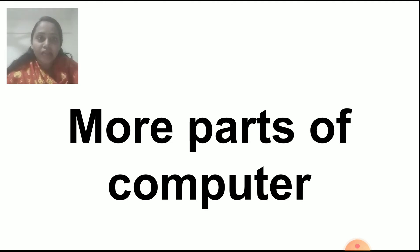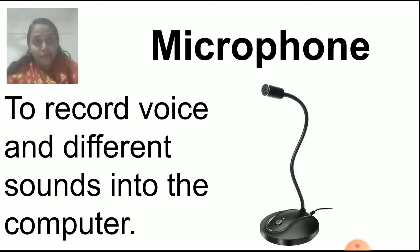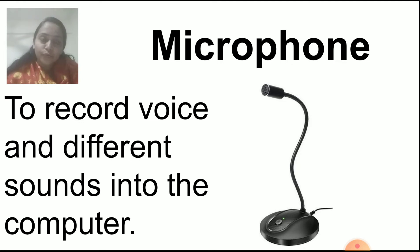Now today we will start with the more parts of computer. First one is a microphone. Can you see the microphone in the picture? We use this microphone to record the voice and different sound into the computer. It has one wire that we attach to the CPU — the brain of the computer — and then whatever we want to record, we can record through this microphone.